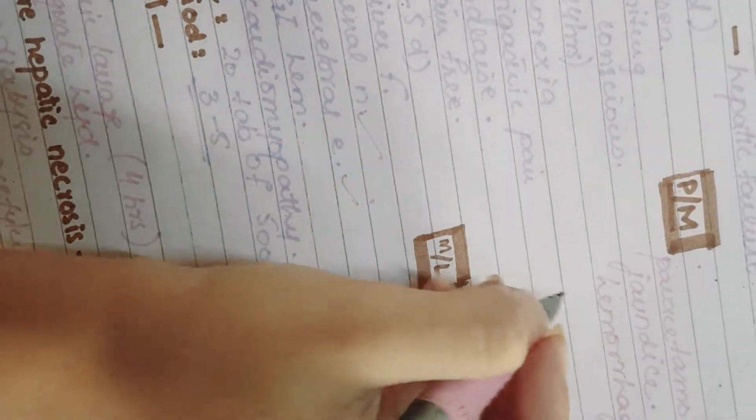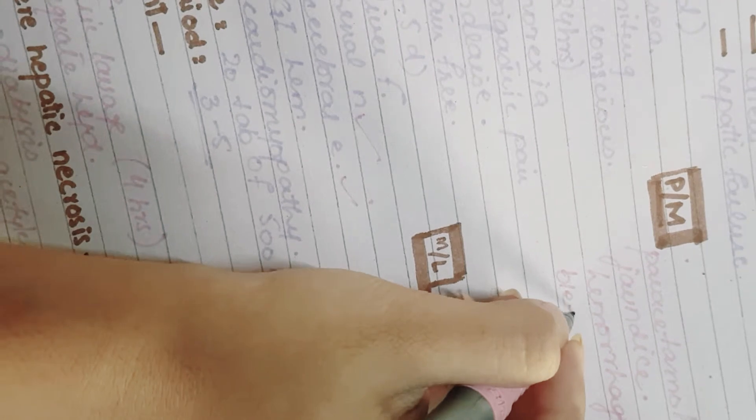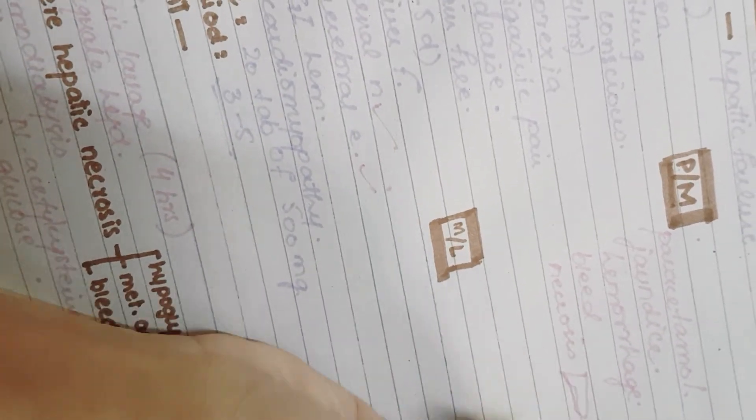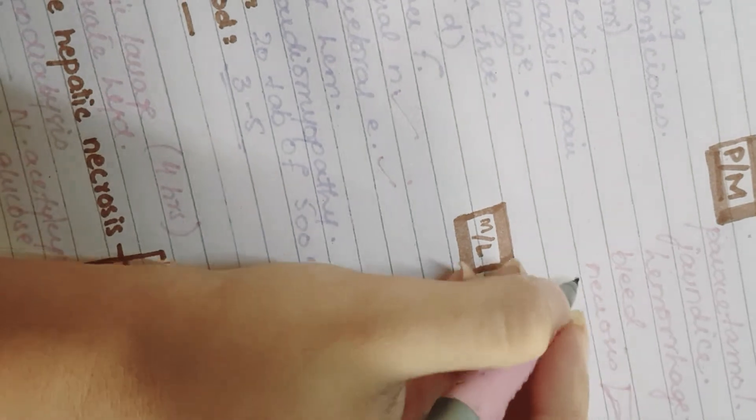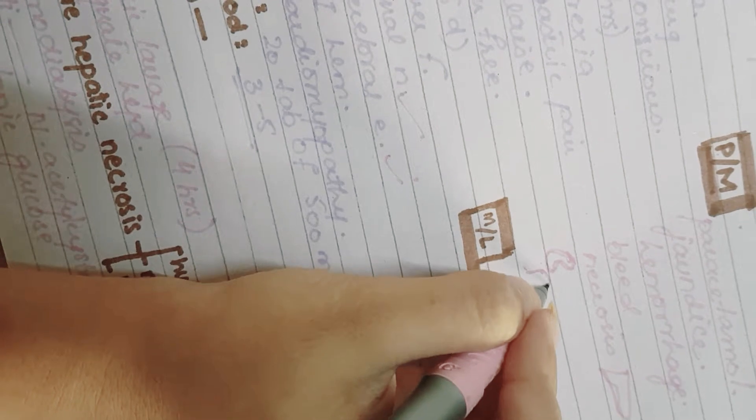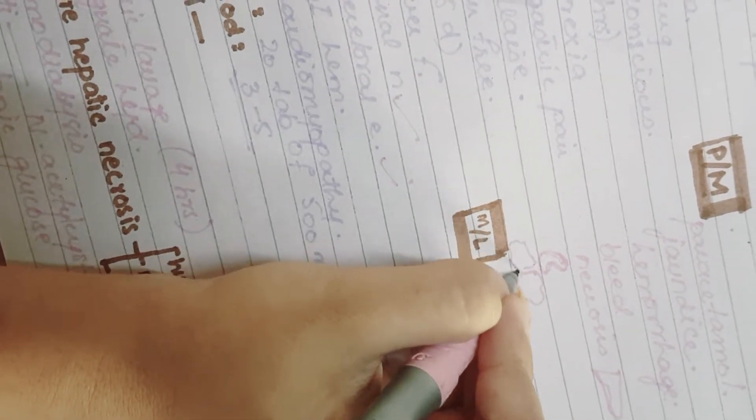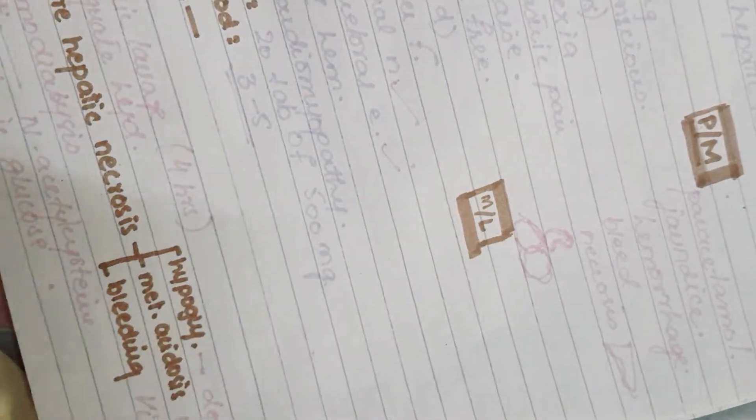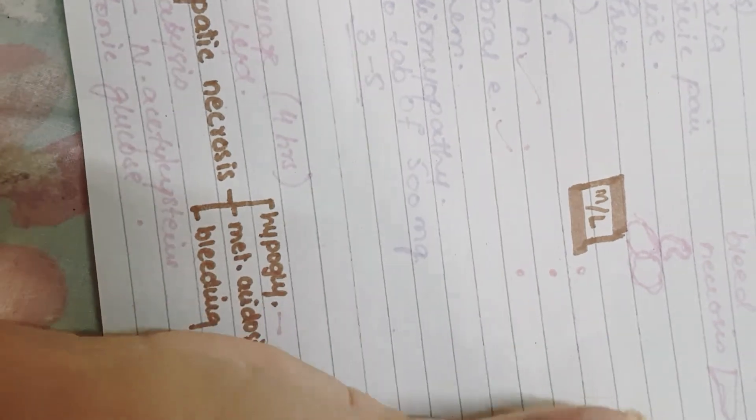There would be GI bleeding, there would be hepatic necrosis, there would be kidney failure, and there would be cerebral failure.